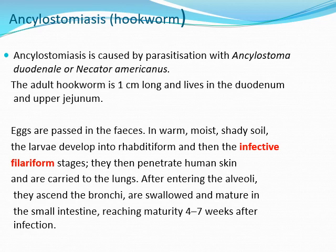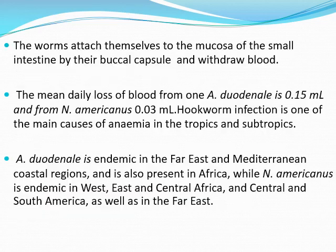تاخذ هذه العملية من أربعة إلى سبعة أسابيع. The worms attach themselves to the mucosa of the small intestine by their buccal capsule and withdraw blood - it causes sucking of the blood. The mean daily loss of blood from one Ancylostoma duodenale is about 0.1 mL.